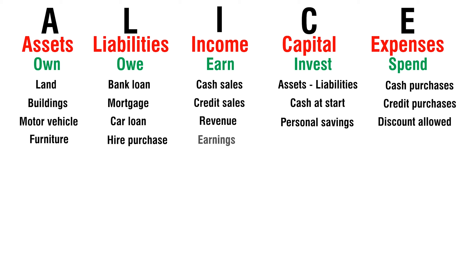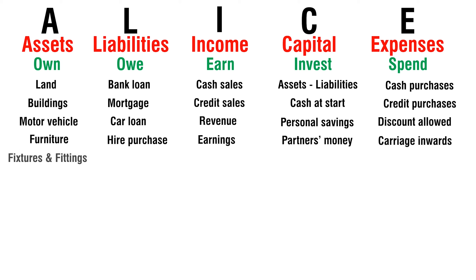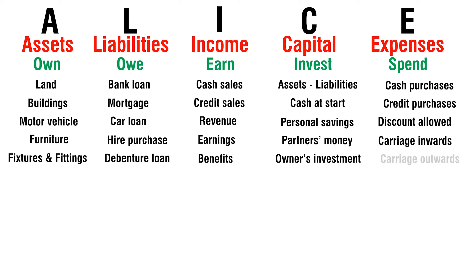Earnings — earn. Partner's money — invest. Carriage inwards — spend. Fixtures and fittings — own. Debenture loan — owe. Benefits — earn. Owner's investment — invest. Carriage outwards — spend.